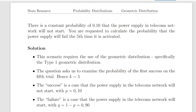There is a constant probability of 0.1 that the power supply in a telecoms network will not start. That's our probability of success — and the definition of success here is the power supply not starting. We are requested to calculate the probability that the power supply will fail the fifth time it is activated.